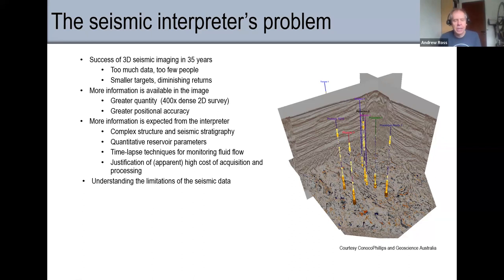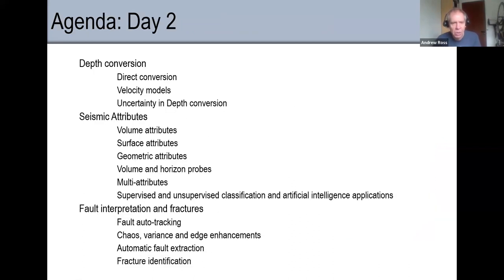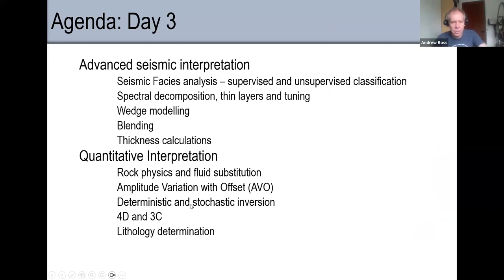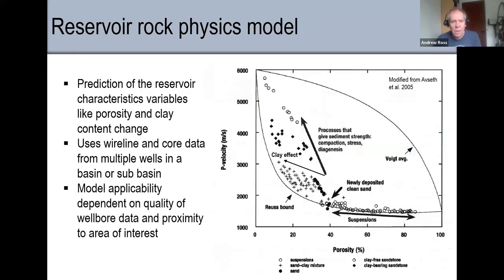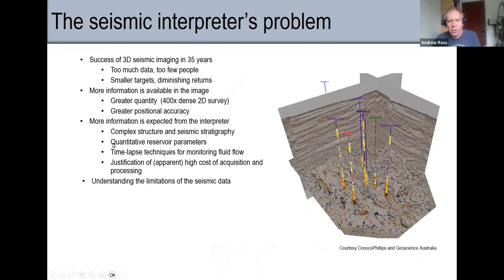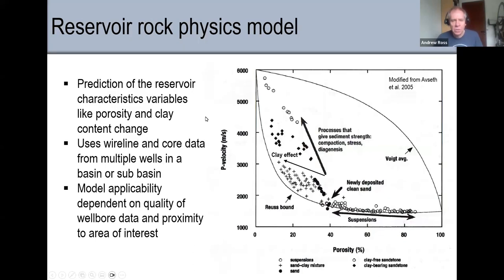I can run a lot of these processes and get some answers, but do they mean anything? I can always run inversion and get an acoustic impedance cube, but does it really mean anything? Is my target going to be visible? Don't try and chase things you know you won't be able to see — or if you can't see it, you need to get better seismic. A big part of the exercise now for a lot of interpretation is relating back to rock physics.